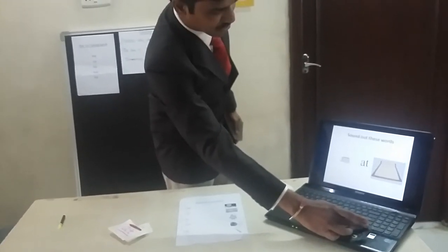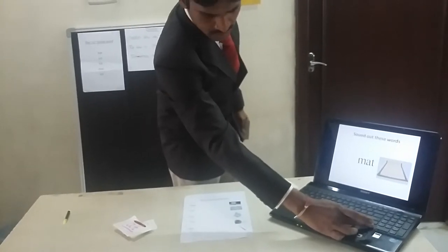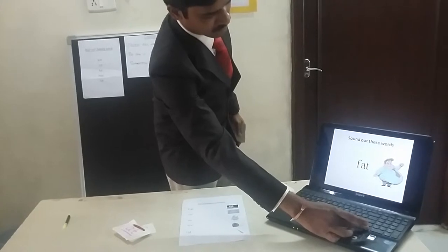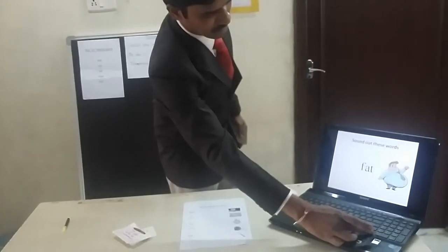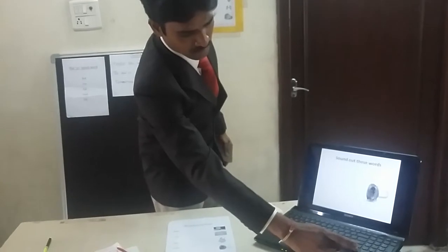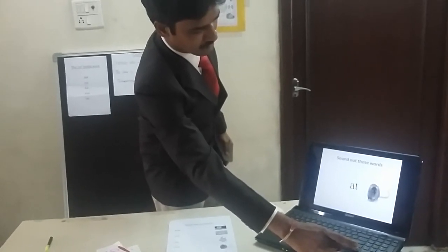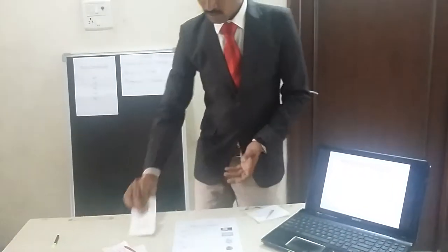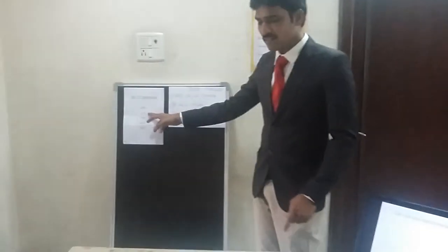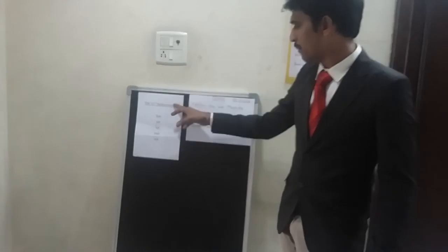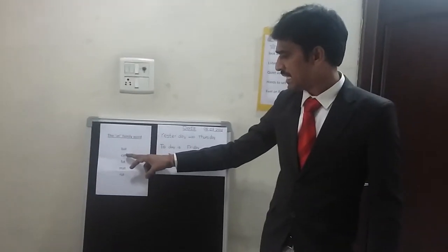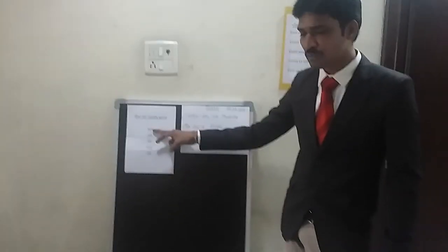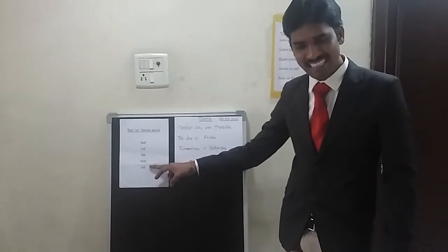Now Sai, yourself. It's a mat. Very good. Fat — so this is the word fat. Now Rajul once again: rat. Oh, that's great! So now let us read together these AT family words. AT is common in these words. When B is added to AT it becomes bat, cat, fat, mat, rat.